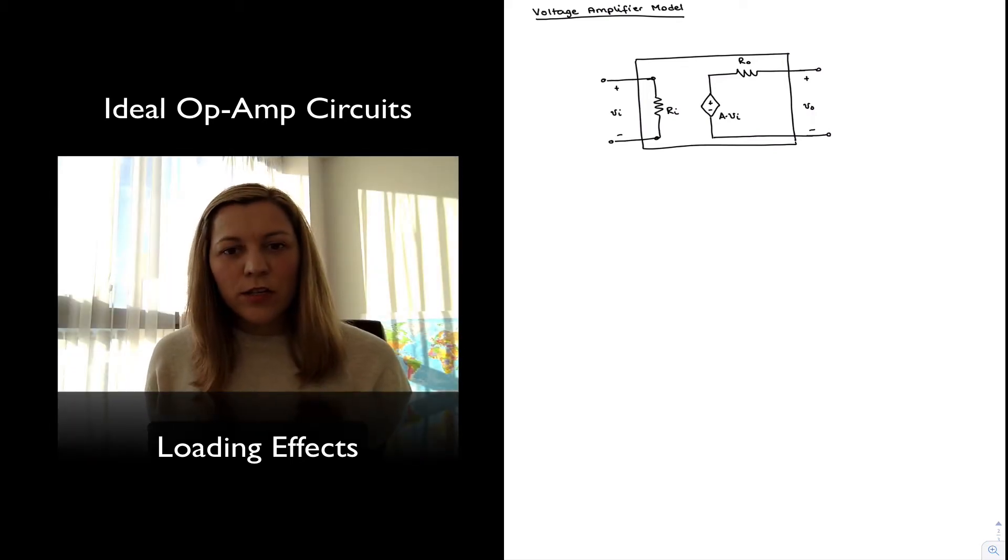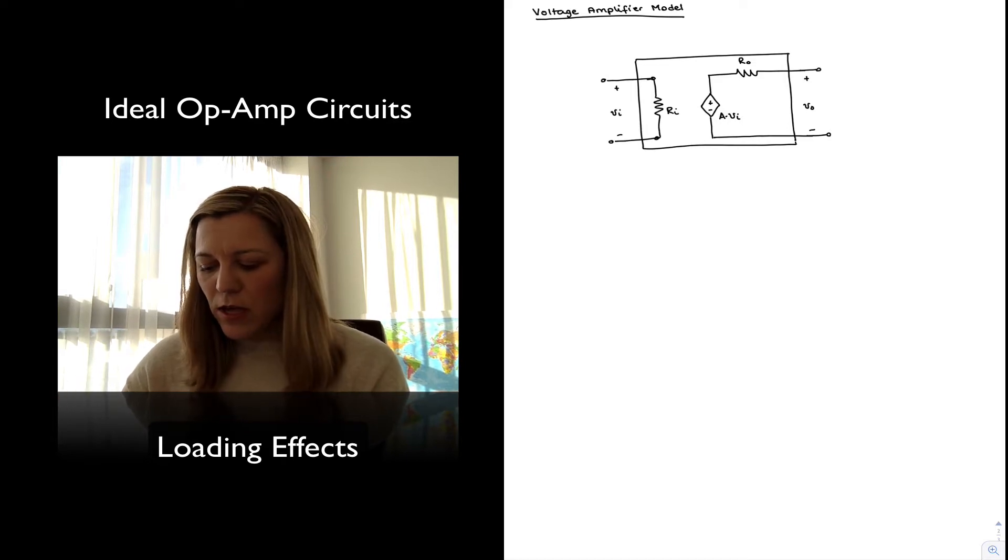Hello. Let's take a quick look at the voltage amplifier model to remember how it operates. A voltage amplifier can be modeled using block diagram notation as a voltage-dependent voltage source whose voltage output value is equal to A, which is a gain factor, times V_in, which represents an input voltage signal.